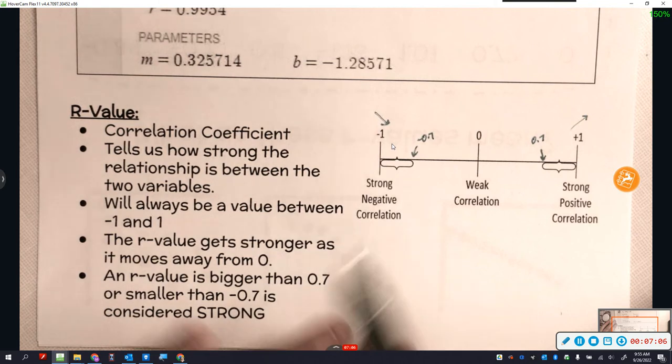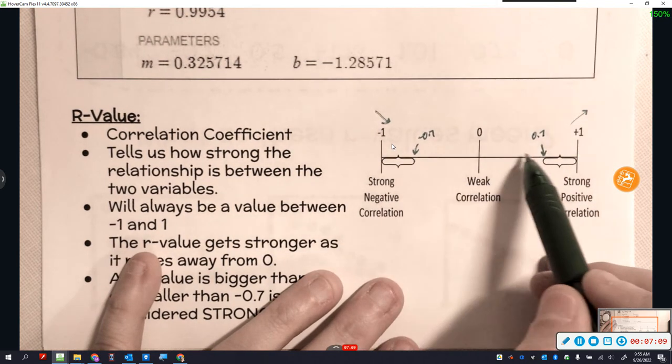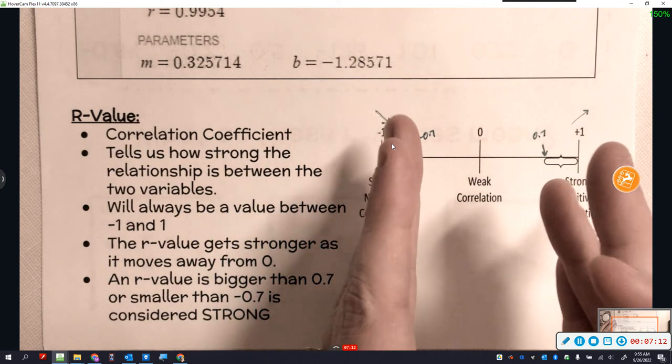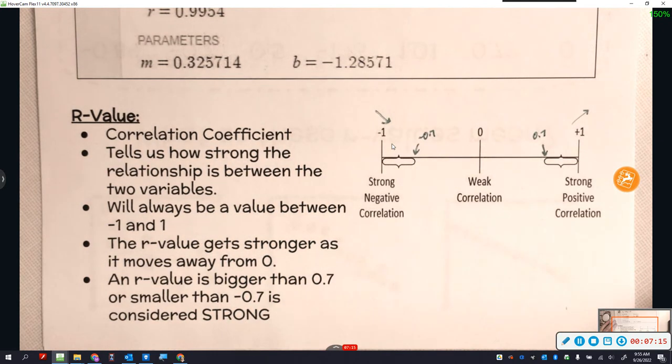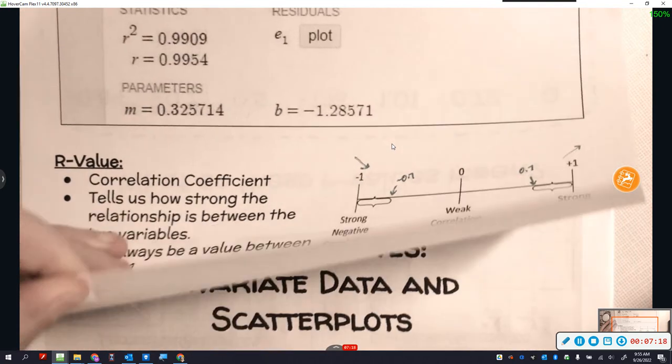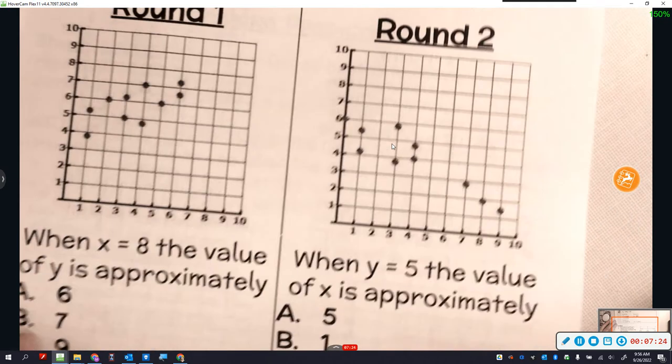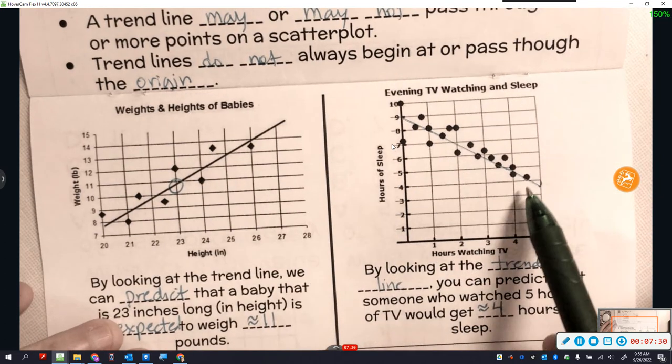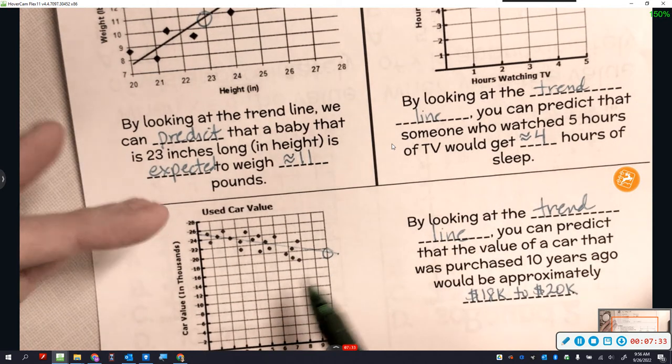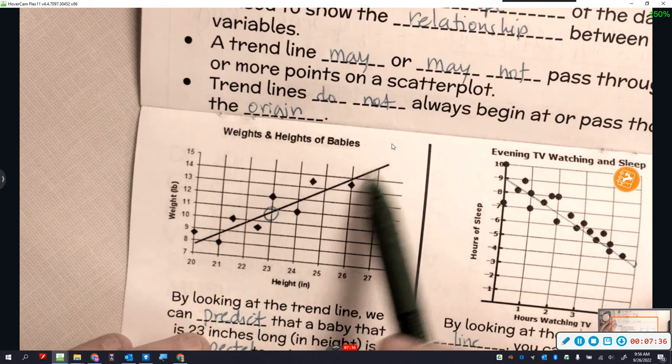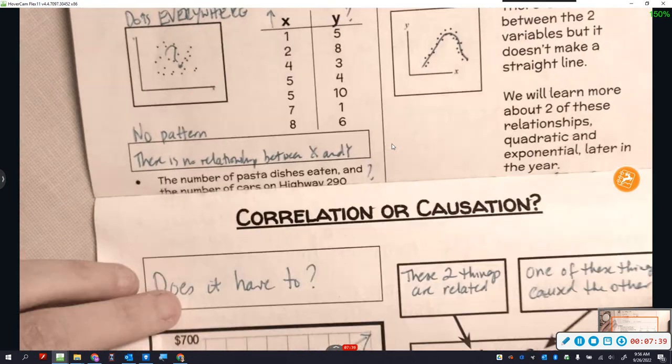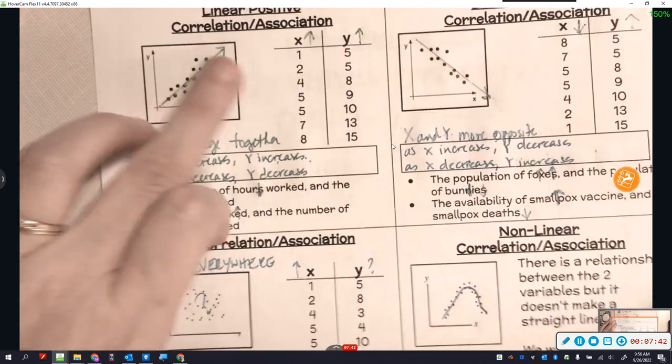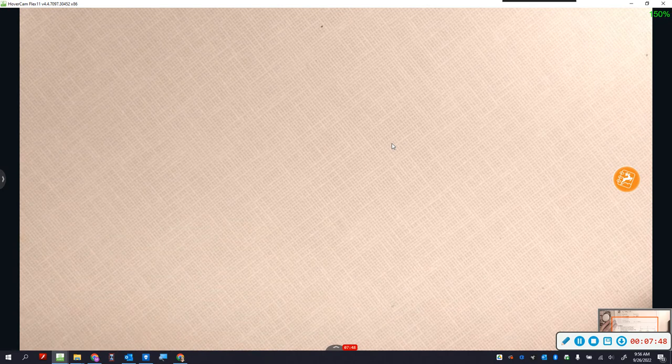Any R value bigger than 0.7, so this is negative 0.7 and that is positive 0.7. Anything from negative 0.7 to negative 1 or positive 0.7 to positive 1, we consider that to be strong. Then anything in between, from negative 0.7 to positive 0.7, anything between there closer to 0, we would consider that to be weak. What does that mean? That means how close are the dots together? Remember when we were drawing these trend lines, this one was a little easier. This one was tricky because the dots weren't very close together.